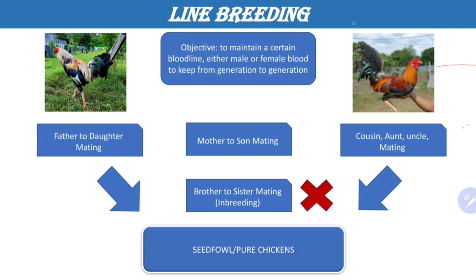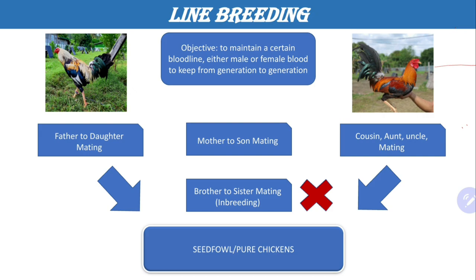So we now proceed to different breeding techniques. We've discussed all about bloodlines, phenotype genes, what the male rooster can provide, and proper selection of materials. Now I will discuss with you different breeding techniques. We'll first discuss the line breeding method.